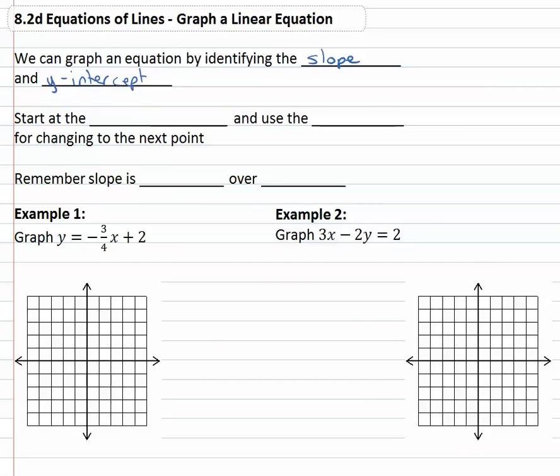If we can identify those two values, we can start the graph at the y-intercept or the y coordinate of the y-intercept and then use the slope which is rise over run to change to find the second point and then simply connect the dots. Again, slope is rise over run.